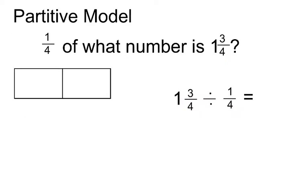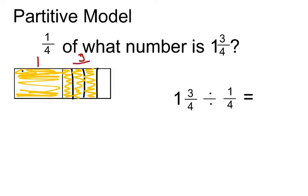So let's look at creating a division problem using a partitive model. We have 1 fourth of what number is 1 and 3 quarters? In a measurement model, we broke it up differently. Looking at the partitive model, we know that 1 whole, which we can color in, plus 3 quarters. So we can divide this into quarters and shade in 3. So this is 1 and 3 quarters.